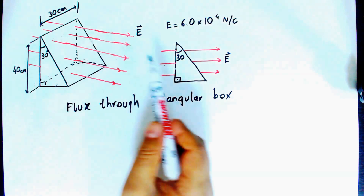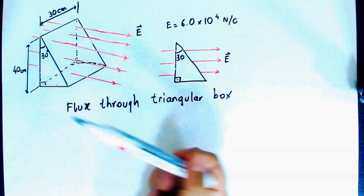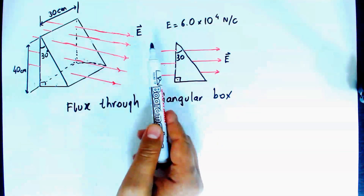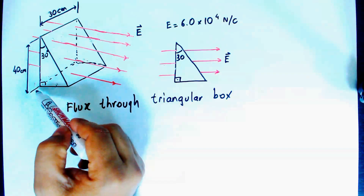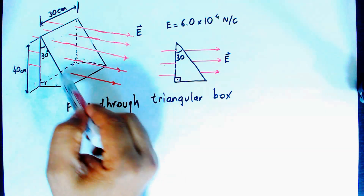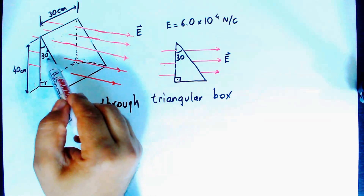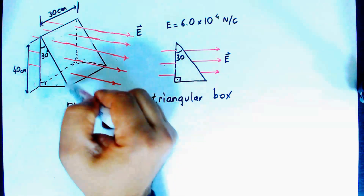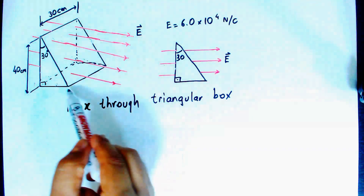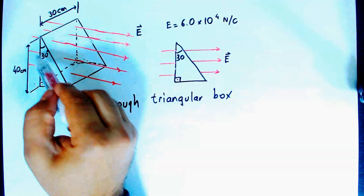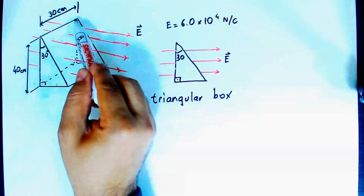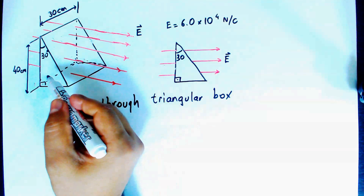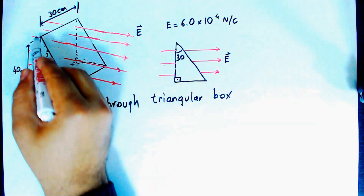The problem is to find the electric flux through this triangular box. We have a triangular box with several faces: one face is a right triangle where this angle is 30 degrees, another parallel face equal to this right triangle, a bottom rectangular face, another rectangular face, and an inclined slanted rectangular face.